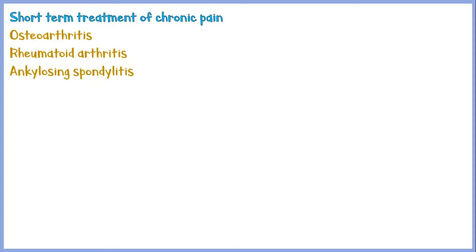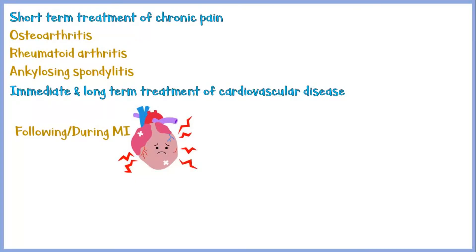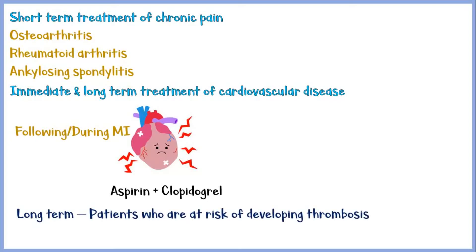Aspirin is mainly used in the immediate and long-term management of cardiovascular disease. It is given to patients immediately after a myocardial infarction to prevent new clot formation and reduce the risk of a recurrent myocardial infarction. It can also be given during a myocardial infarction to prevent further damage to the already ischemic myocardium. Most of the time, aspirin is given along with other anticoagulants like clopidogrel to increase efficacy. Aspirin is also used as a prophylactic treatment for patients at risk of developing thrombosis with other risk factors like dyslipidemia and diabetes mellitus.